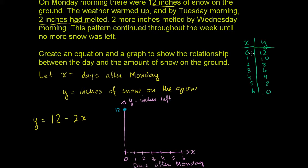So let's plot these points. We've already plotted (0, 12) in that blue color. Now let's plot (1, 10)—that's right about there. Then we can plot (2, 8). So two days after Monday, we have 8 inches left on the ground. This is on Wednesday, so that's 8 inches.